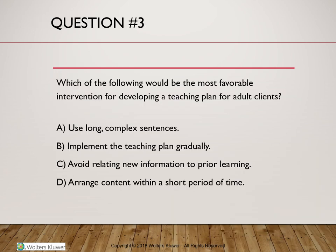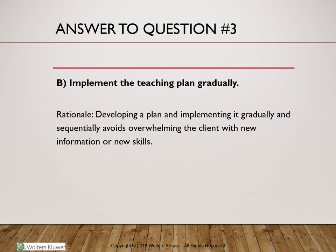Quiz: Which of the following is the most favorable intervention for developing a teaching plan for adult clients? A) Use long, complex sentences; B) Implement the teaching plan gradually; C) Avoid relating new information to prior learning; or D) Arrange content within a short period of time. The correct answer is B — implement the teaching plan gradually. Developing a plan and implementing it gradually and sequentially avoids overwhelming the client with new information or difficult new skills.